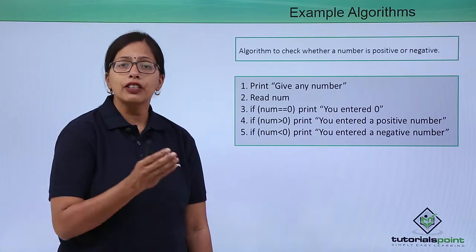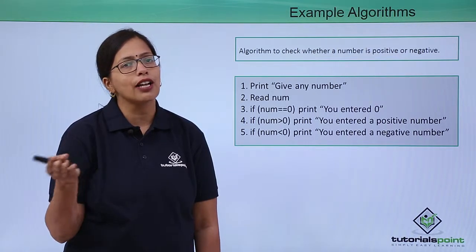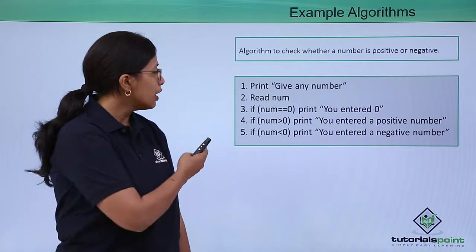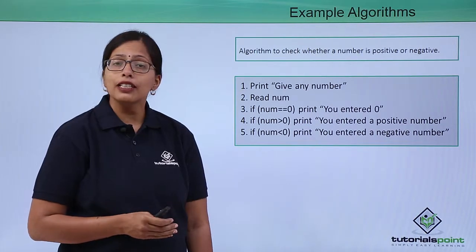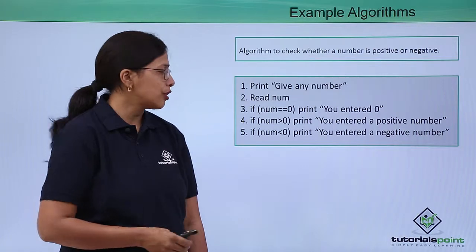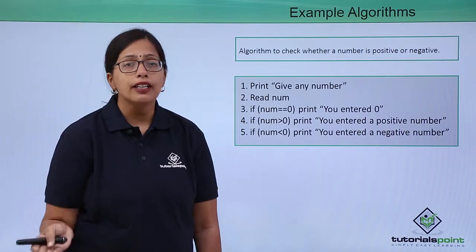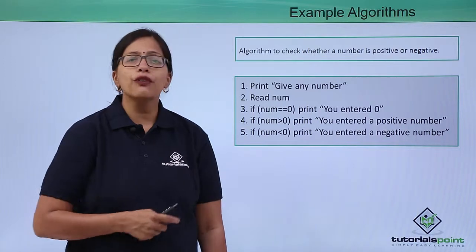Then you will compare it with 0. If number equals 0, print 'You entered 0' because 0 is neither negative nor positive. If num is greater than 0, print 'You entered a positive number.' If it is less than 0, then print 'You entered a negative number.'